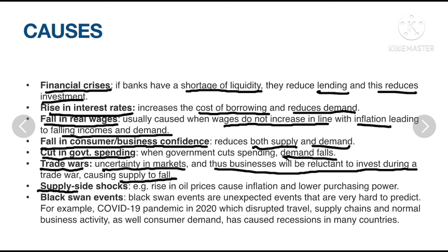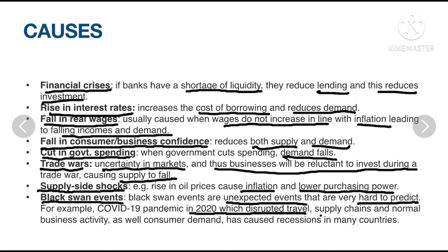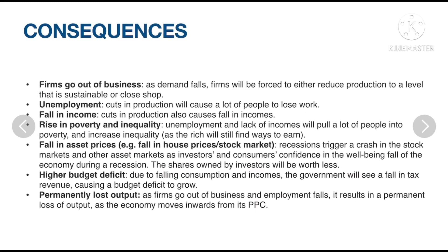Supply-side shocks — for example, a rise in oil prices will cause inflation and lower purchasing power parity. Black swan events are unexpected events that are very hard to predict — for example, the COVID-19 pandemic in 2020, which disrupted travel, supply chains, and normal business activity, as well as consumer demand, causing recession in many countries.